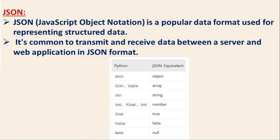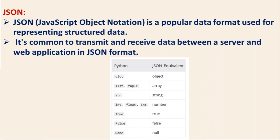We have a small diagram here. In terms of Python, if it is a dictionary, in terms of JSON it is an object. Whatever Python lists and tuples are, they are simply JSON arrays. String is string. Integer, float, complex — they are numbers in JSON. True and false with small letters in JSON. None becomes null. If you remember this while working in real time — for example those working on the AWS side creating policies, which are in JSON format — it will be very helpful.